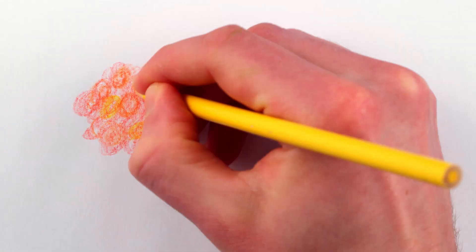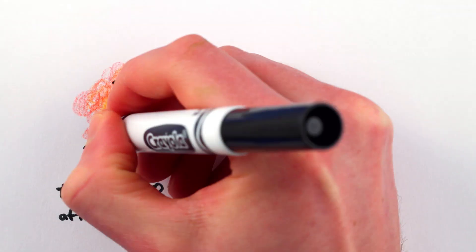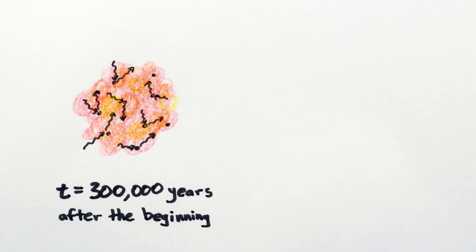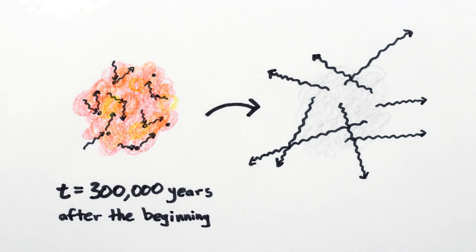And in the hot plasma of the baby universe, light was bouncing off of electrons left and right, until the plasma cooled enough to become transparent so the light could start traveling through space.